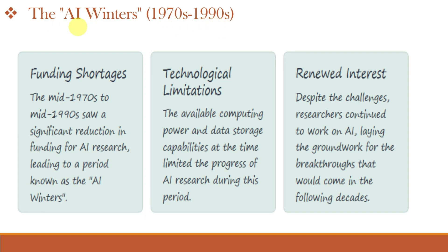The period from the 1970s to 1990s can be called the AI Winters. This was the period when interest and funding in AI decreased significantly. Just as everything becomes standstill in chilly winters, the development in AI also stopped. While interest and funding did not stop altogether, they were severely reduced — due to funding shortages as researchers did not get enough funds for AI research, and also due to technological limitations because available computing power and data storage capability was very limited. But despite these challenges, researchers continued to work on AI with renewed interest.